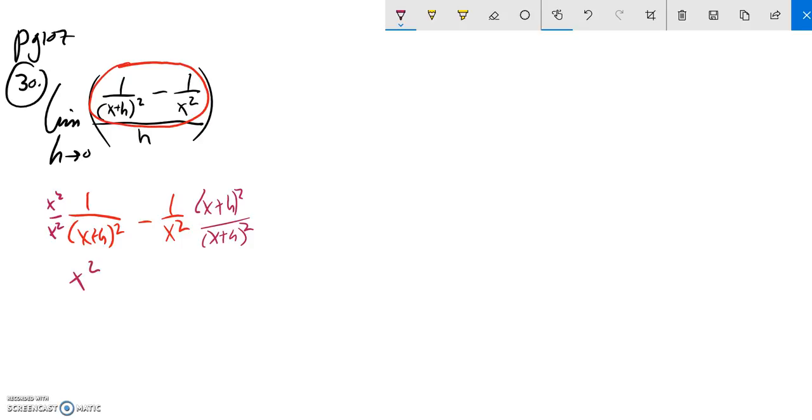And so that's going to leave me with x squared minus (x + h) squared over x squared times (x + h) squared.